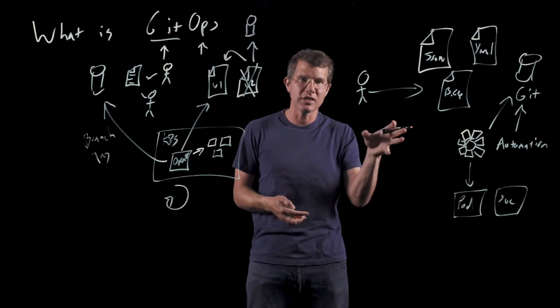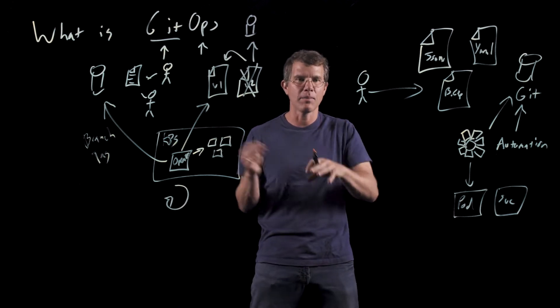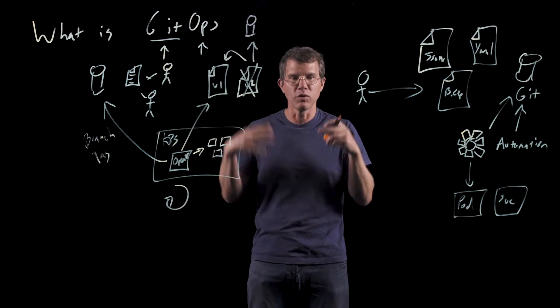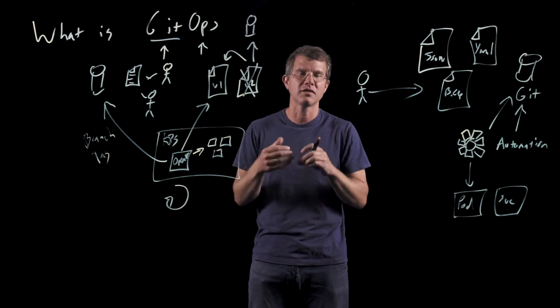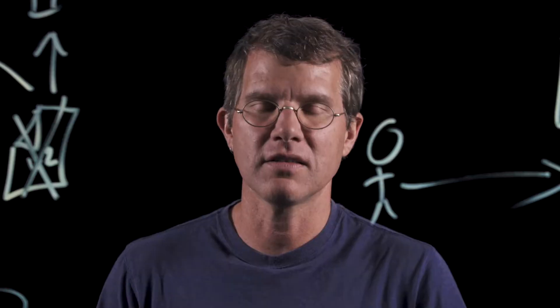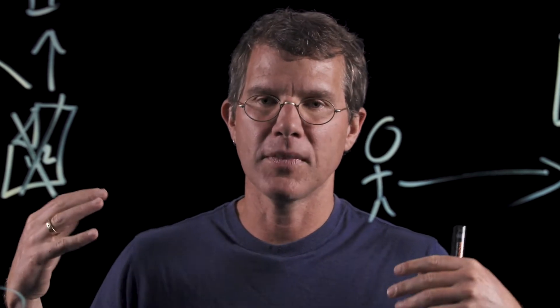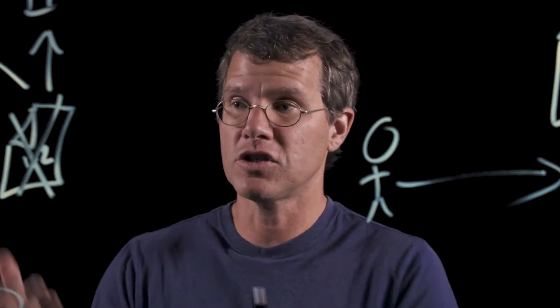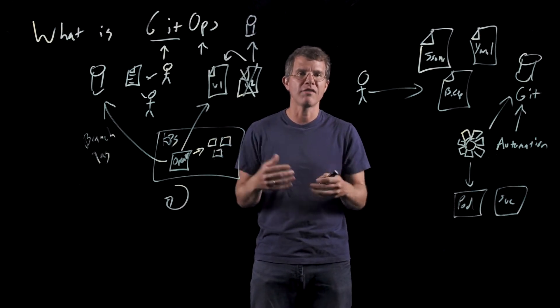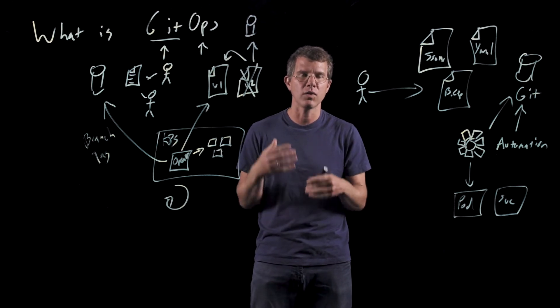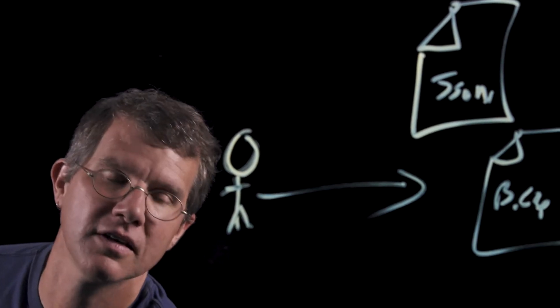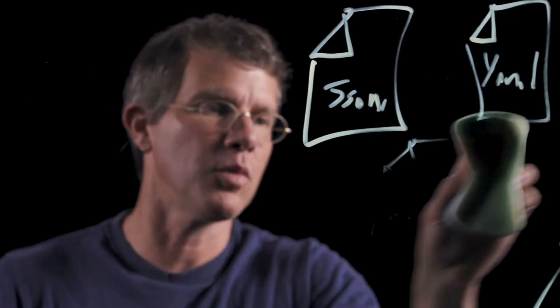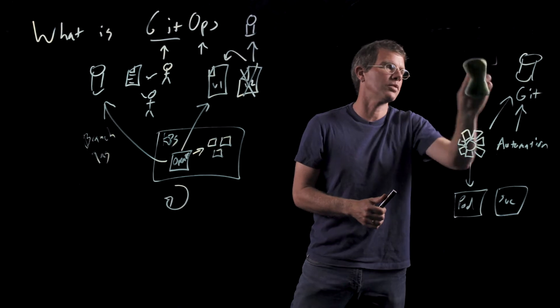Going back to our thermostat analogy, if we turned the temperature up too high, we take a step back and turn it down. That same operator will fix the state of the world to be the desired state we want to see. The great thing about this is not just that you're doing infrastructure as code and declarative configuration in a really simple way — you can manage your cluster using just Git push and Git pull. There are also a lot of best practices you can associate with GitOps that make it even better. We'll look at those practices and then dive into the scale aspects of managing multiple clusters at once.